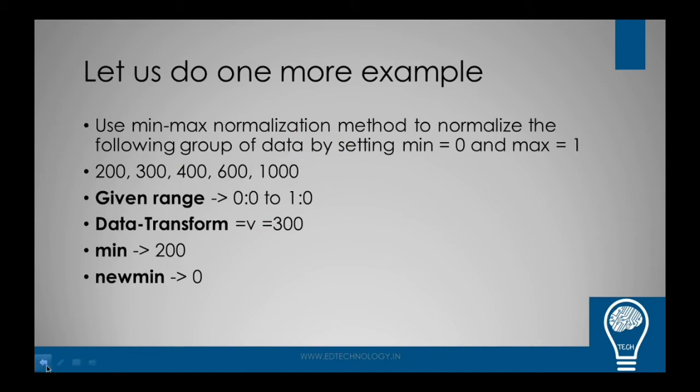So the new_min and new_max is 0 and 1. The range of values here is, if you can see properly, 200 to 1000. That is the set of values we have. Data which I'll be taking up to transform is 300. As you can see, we have the given range which is 0 to 1. Data chosen is from the range itself, 300. New_min is 0, old min is 200, old max is 1000, new_max is 1.